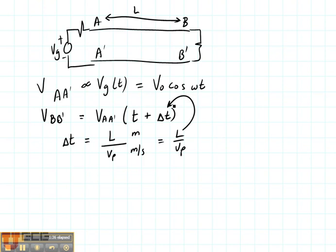Now let's consider what the velocity of propagation is. For most transmission lines, the velocity of propagation is about two-thirds times the speed of light in air. And remember that the speed of light is 2.996 times 10 to the 8 meters per second.